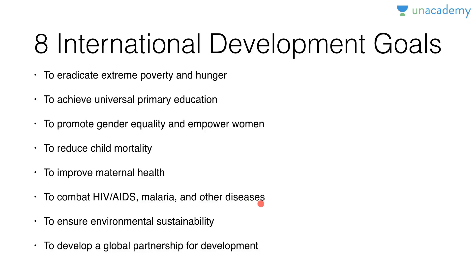There was a lot of funding for these goals from G8 to the World Bank and IMF so that heavily indebted poor countries could redirect their resources to achieve these targets.